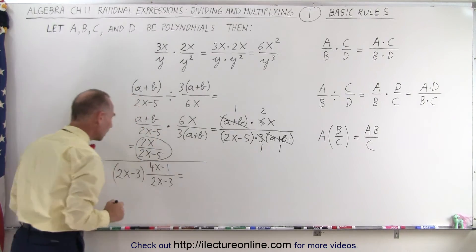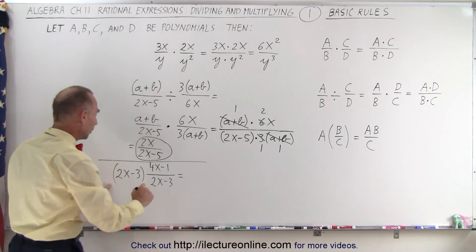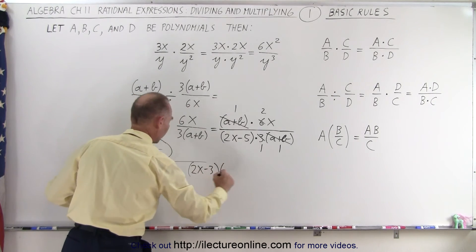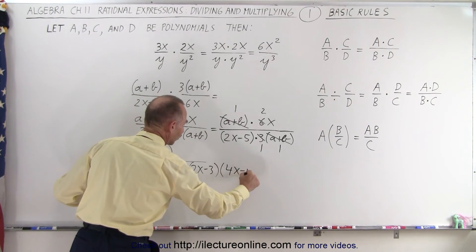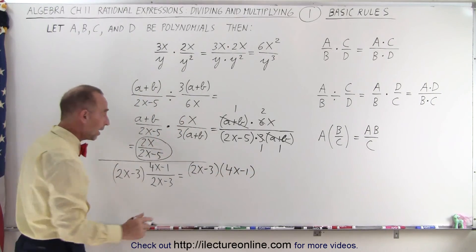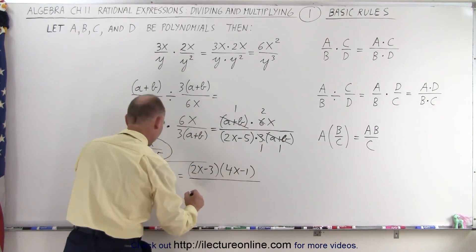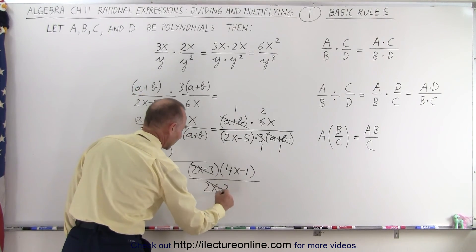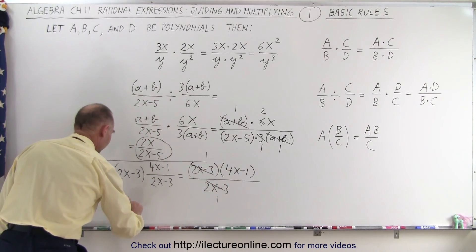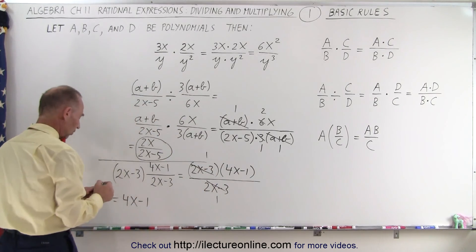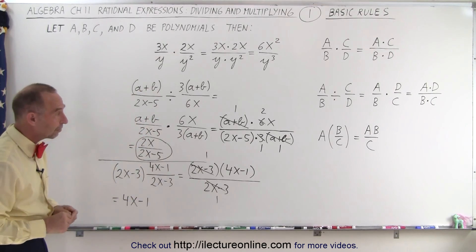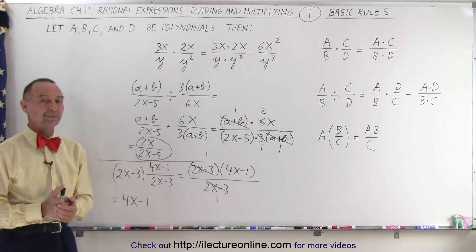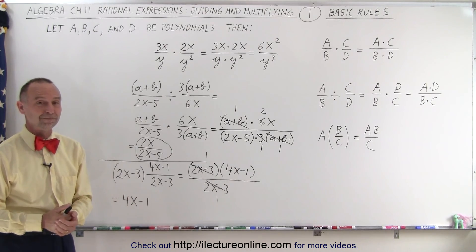Here we can use the third rule, where this can be written as the quantity 2x minus 3 times 4x minus 1, divided by 2x minus 3. We can see that the 2x minus 3 factors clearly cancel out, and therefore we're left with simply 4x minus 1. So here are some nice examples showing the three basic rules for multiplying and dividing rational expressions — and that's how it's done.